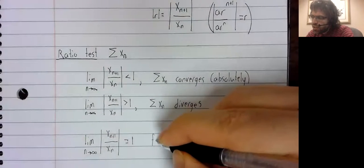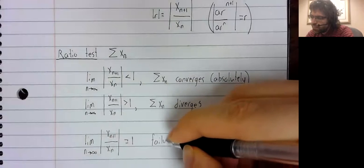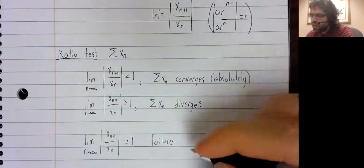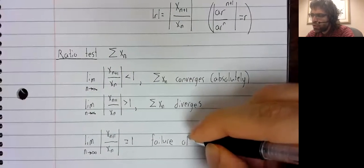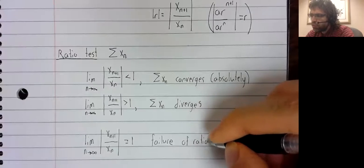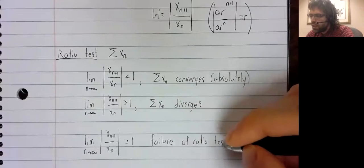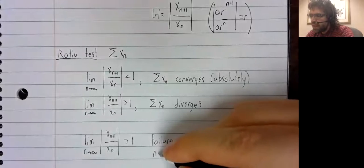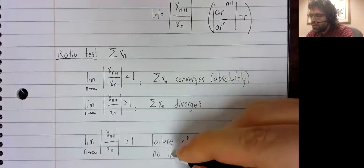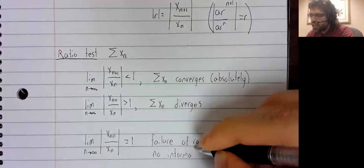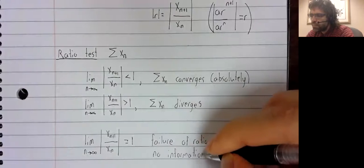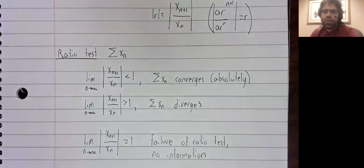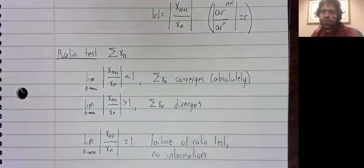Well, unfortunately, this case represents a failure of the ratio test. We get no information. It could converge. It could converge absolutely. It could diverge. We don't get anything.